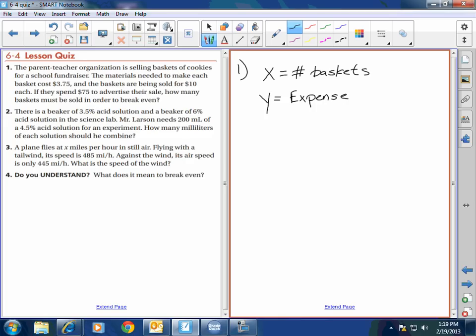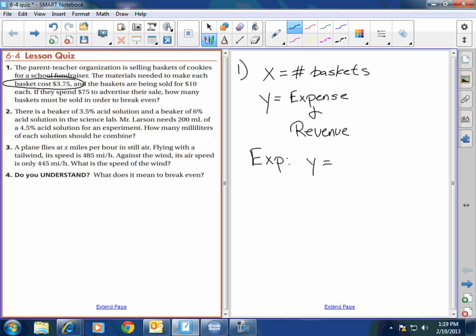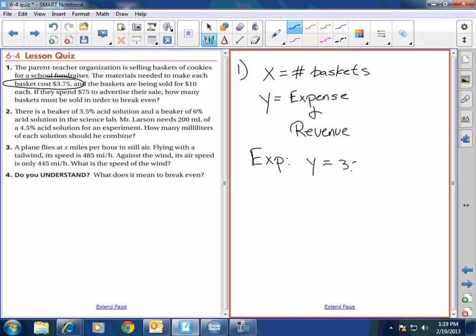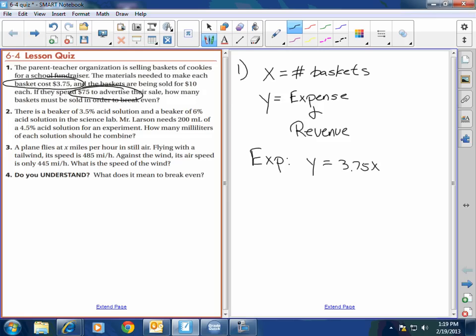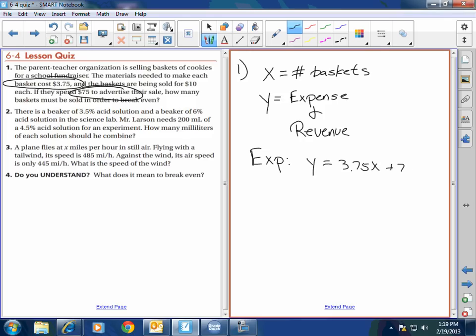And then Y is expense, and it's also revenue. It's both, because your revenue, what you make, depends on how many you sell, and your expenses, what it costs you, depends on how many you sell. So that's the first part. Now, let's think about it. My expenses that I see here are Y equals cost $3.75 for each basket, so $3.75X, and they spent $75 to advertise, so plus $75.